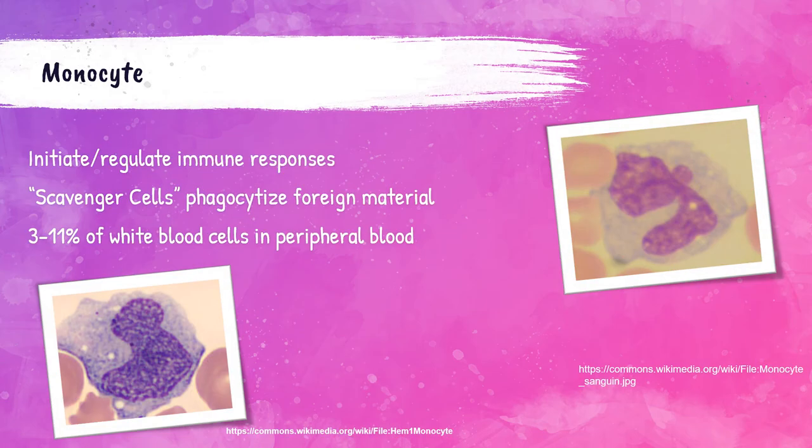Monocytes account for three to eleven percent of white blood cells within the peripheral bloodstream. Along with lymphocytes, monocytes help to initiate and regulate the body's immune responses. They are considered scavenger cells and can phagocytize, or eat up, any foreign material. Under the microscope, monocytes can be spherical or amoeboid in shape with a nucleus that can be bean-shaped, and they can have vacuoles present within the cytoplasm.